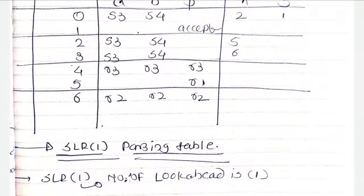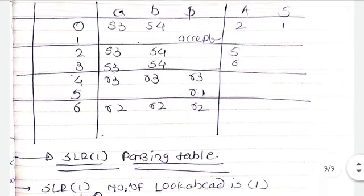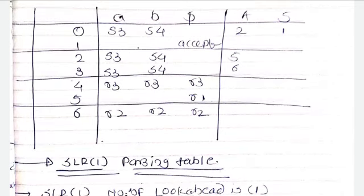Next, sixth. What is the follow of next symbol? That is A, B and dollar. That's why here we will write R2, R2 and R2 reduction. That is reduction into the column of A, B and dollar. So this is the basic difference between LR0 and SLR1.